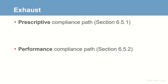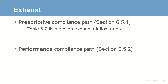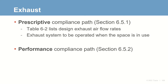This section includes two compliance paths: a prescriptive path and a performance path. When using the prescriptive path, you simply look up the required exhaust air flow rates in a table, similar to the ventilation rate procedure. The exhaust system is then to be operated at this rate whenever the space is in use.